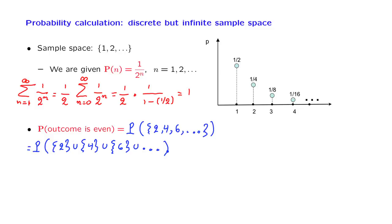At this point, we notice that we are talking about the probability of a union of sets. And these sets are disjoint because they contain different elements.